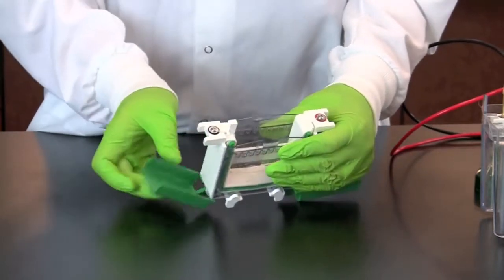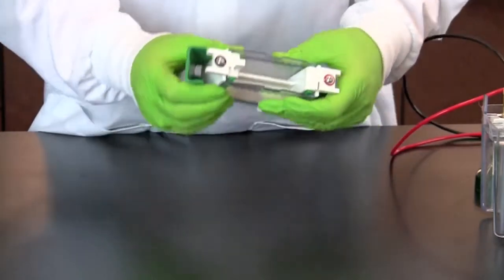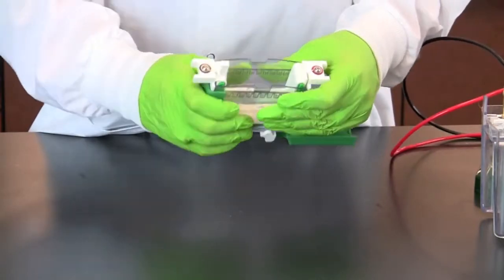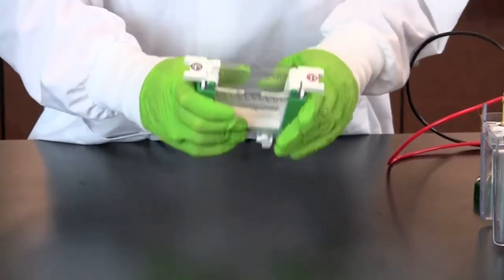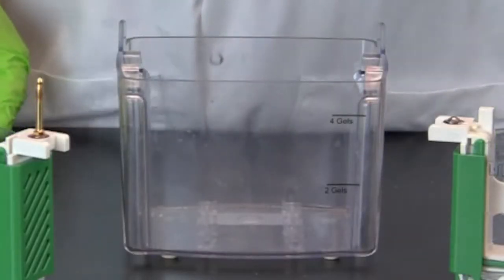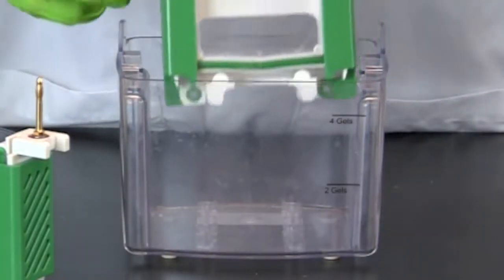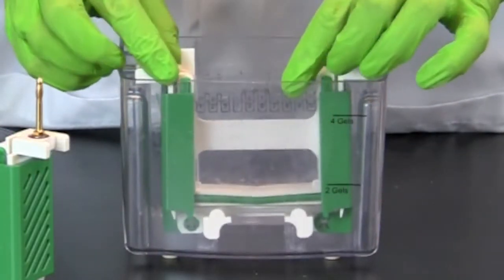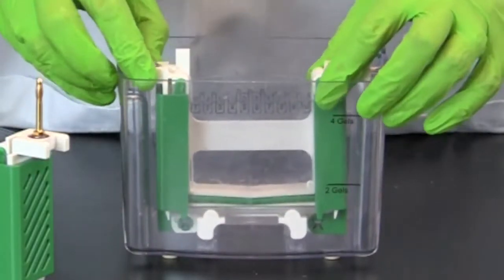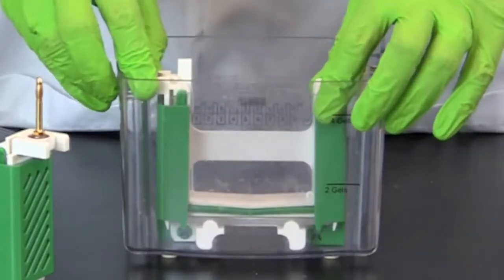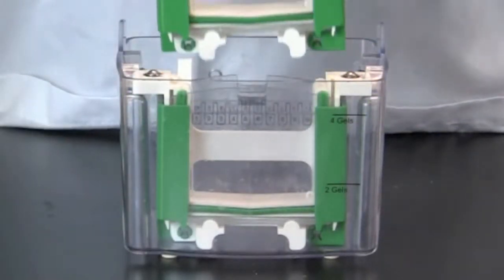Lock the green clamps over the gels. Lower the electrode assembly into the tank on the side of the tank with the plastic tabs. Make sure to match the red banana plug to the red oval on the tank. Lower the second assembly in the same manner.